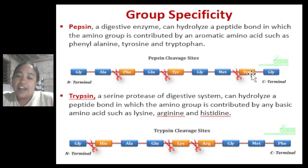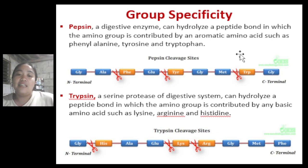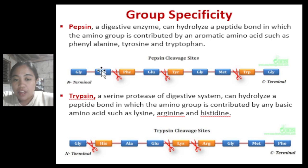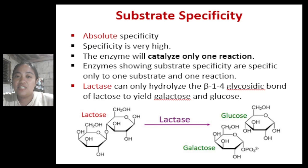If there is a phenylalanine, tyrosine, or tryptophan, that is the peptide bond that pepsin will hydrolyze. Another example is trypsin, a serine protease of the digestive system. Trypsin can hydrolyze a peptide bond in which the amino group is contributed by basic amino acids such as lysine, arginine, and histidine. So trypsin specifically breaks the peptide bond at basic amino acid residues.